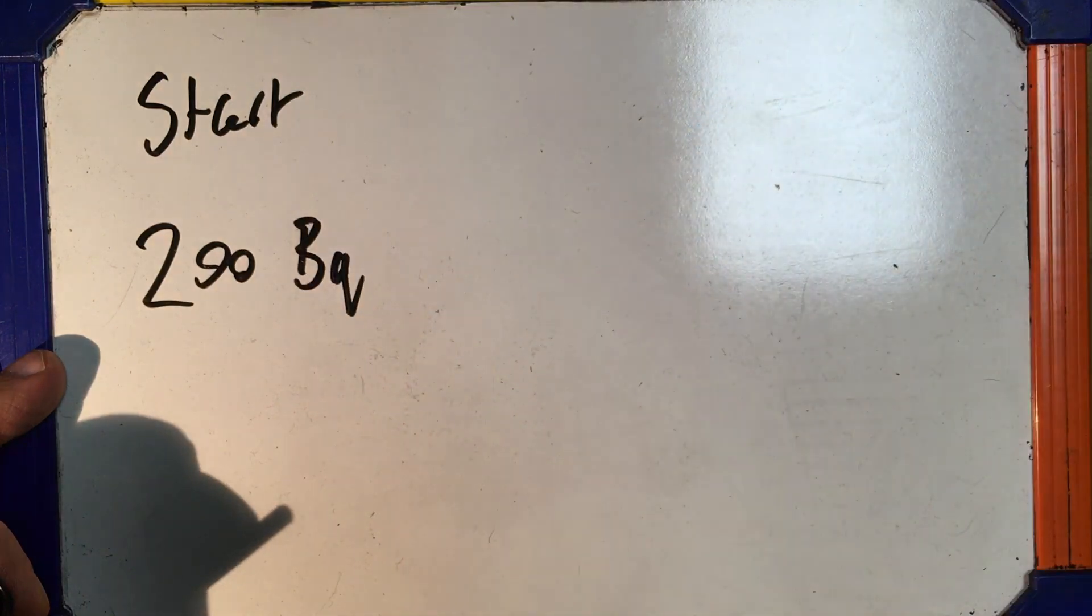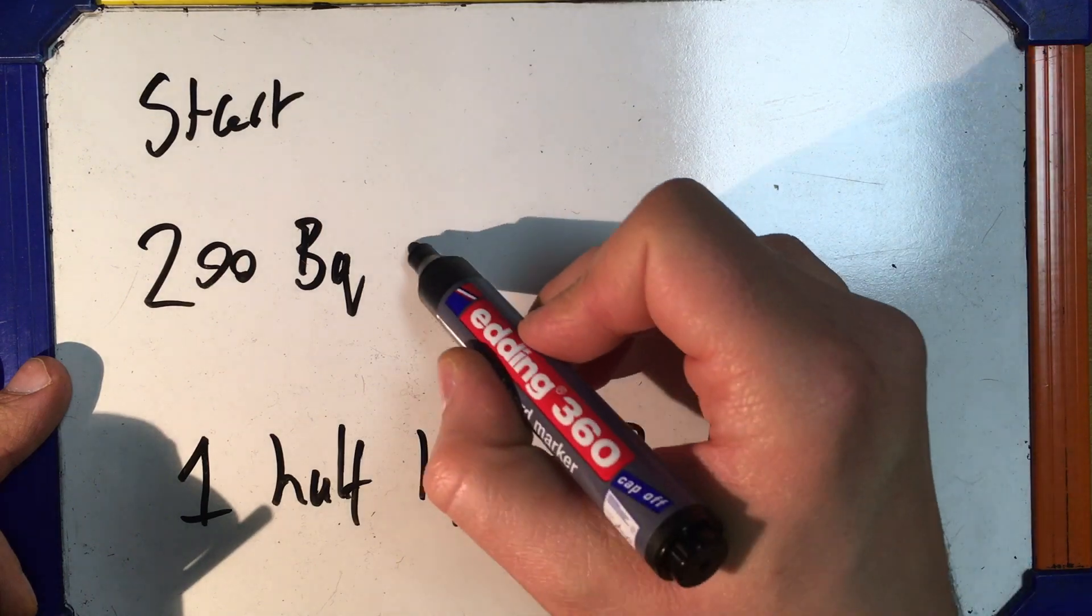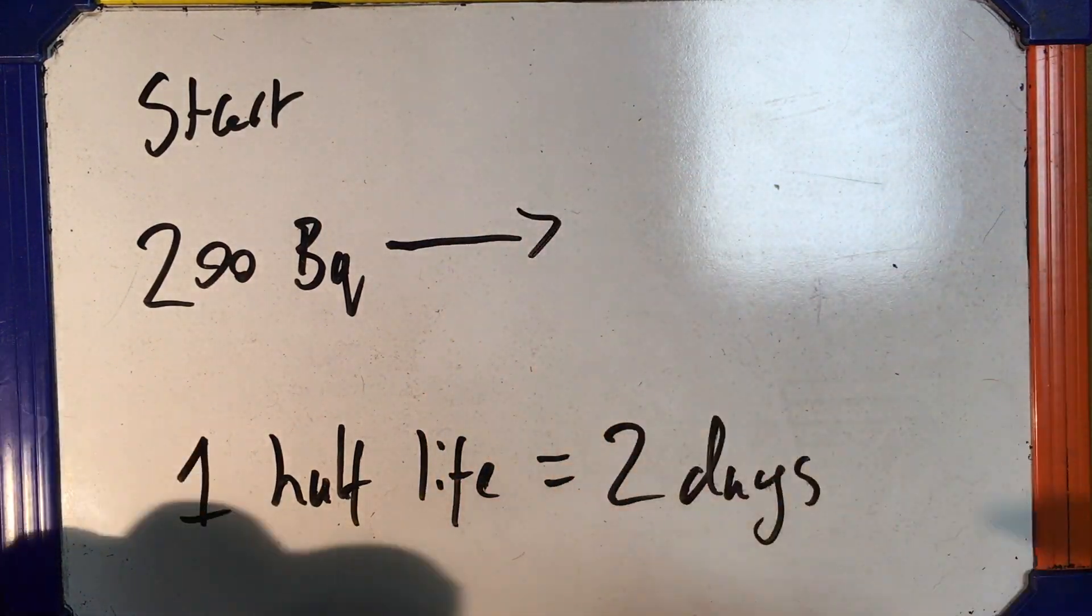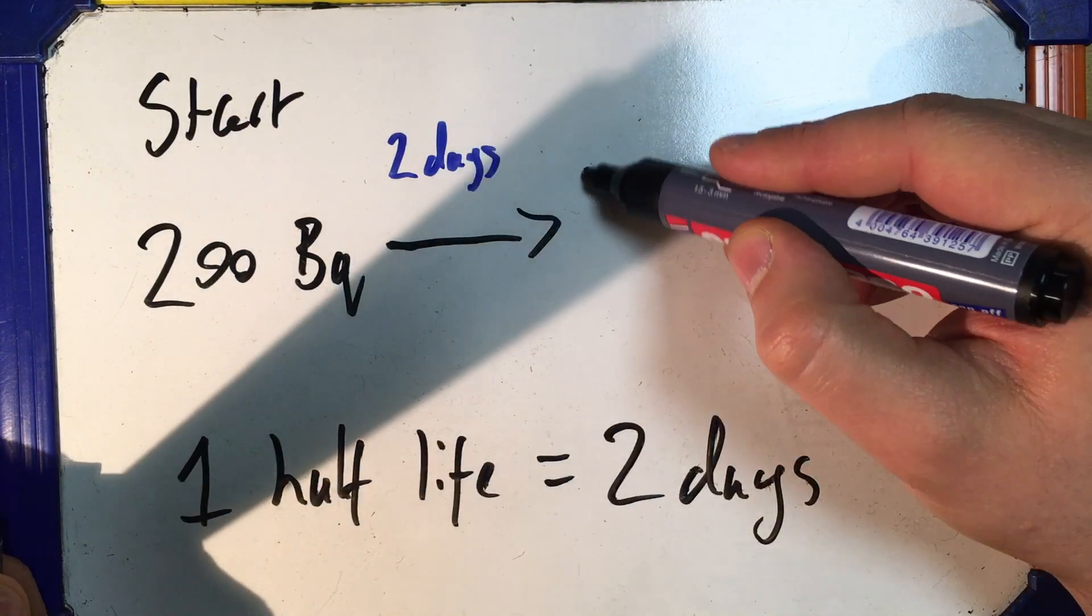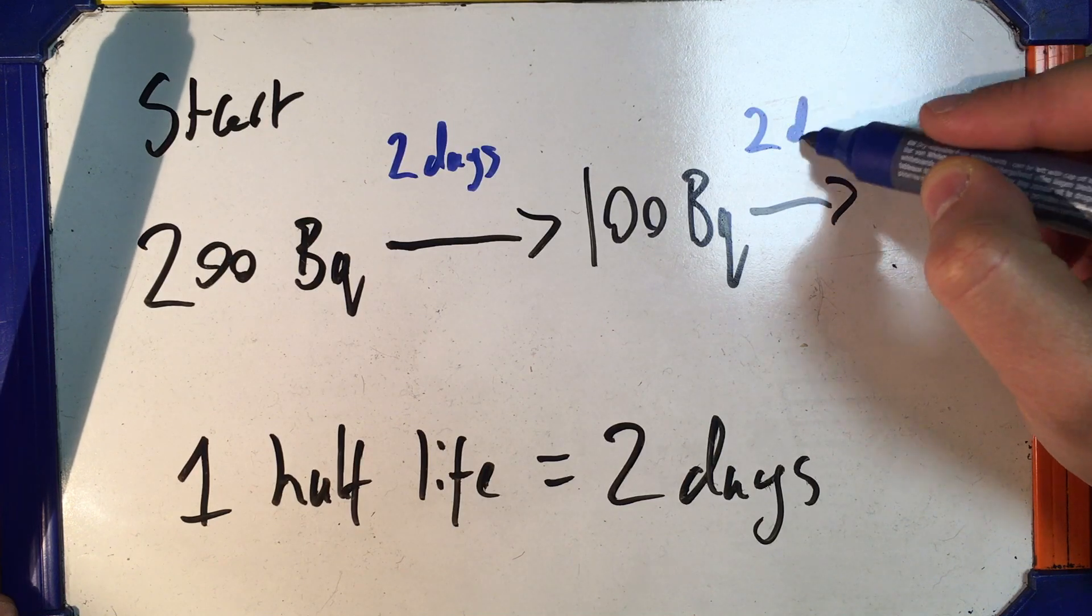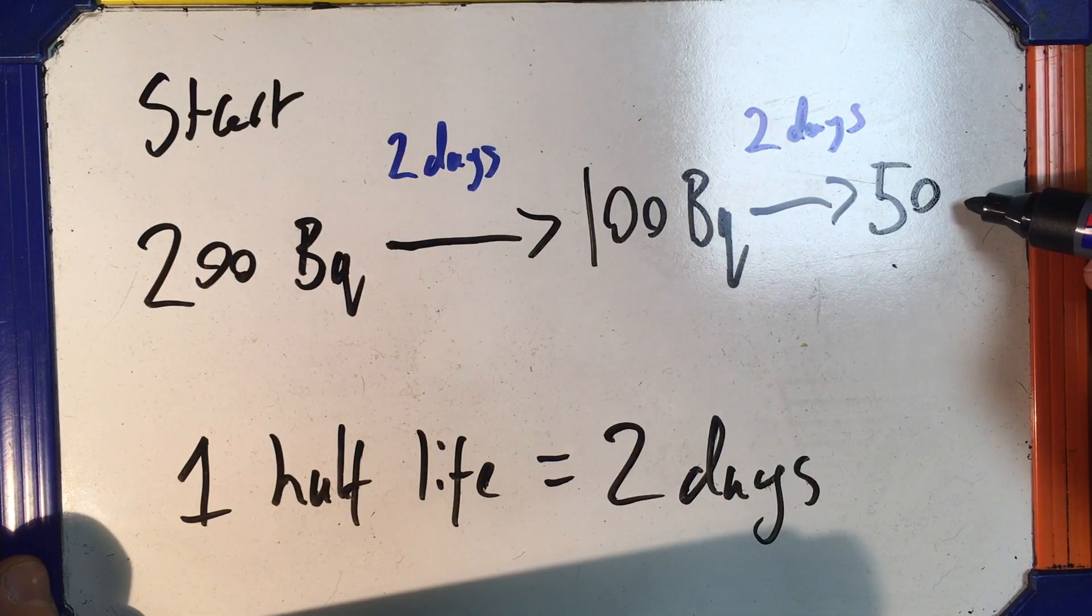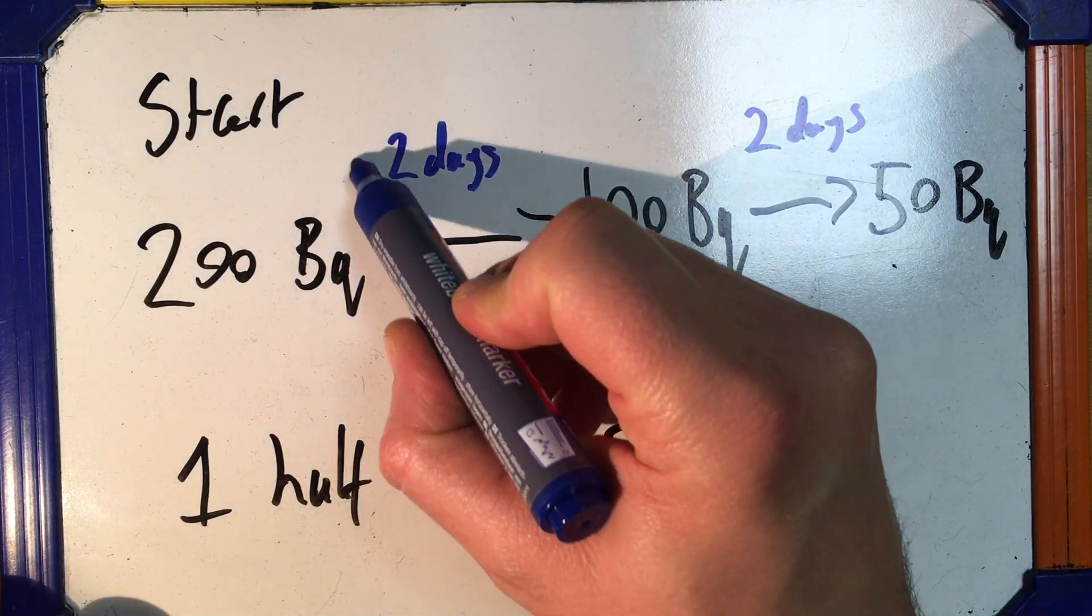Alright, so we start with 200 becquerels and we know 1 half-life is 2 days. So after 1 half-life, which is 2 days, I will have 100 becquerels. I've halved the activity. After 2 more days, after a second half-life, I'm going to have 50 becquerels.